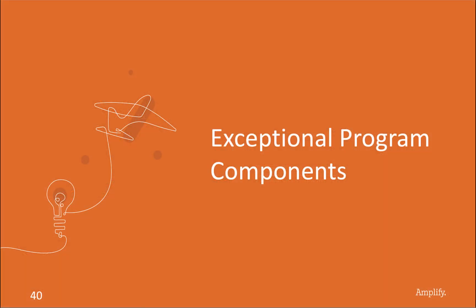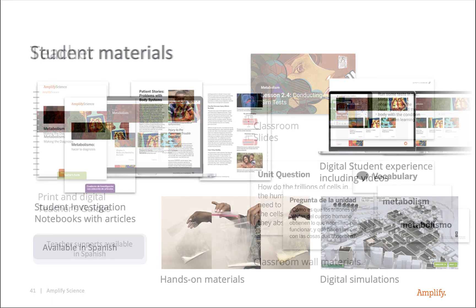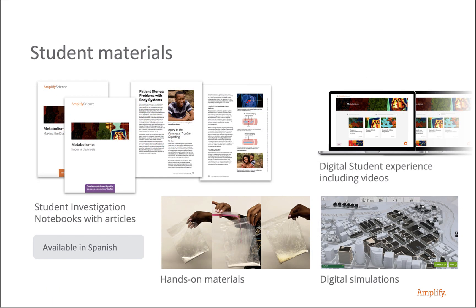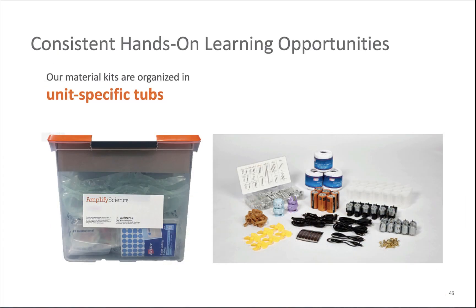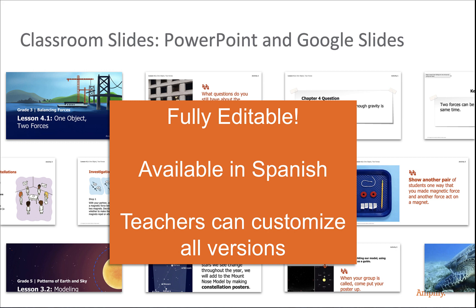Now let's talk about the exceptional program components you get to use to teach Amplify Science. Teacher materials include a print and digital teacher guide, with all lesson supports available in Spanish. We have classroom slides and provide all classroom wall materials in both languages on heavy card stock. Student materials include student investigation notebooks with print articles, the digital experience including videos, hands-on material kits, and digital simulations. Our hands-on material kits provide consistent hands-on learning organized in unit-specific tubs — each unit has its own tub designed for a class size of 40 students up to five periods a day, with students working in groups of two or four. Our most powerful resource is our classroom slides, available in PowerPoint and Google versions, fully editable, available in Spanish, and a true clickable lesson plan.